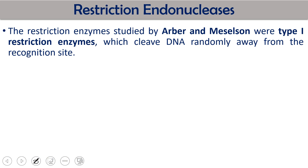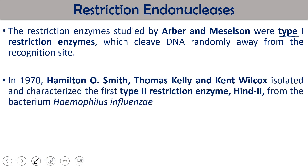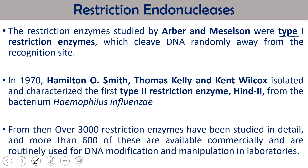The history of restriction endonucleases: they were first studied by Arber and Meselson, who studied the Type I restriction enzymes, which cleave randomly away from the recognition site. Then in 1970, Hamilton O. Smith, Thomas Kelly, and Kent Wilcox isolated Type II restriction enzyme Hind II — the first enzyme isolated from Haemophilus influenzae. This is the enzyme preferably used in molecular cloning. Till now more than 3000 restriction enzymes have been studied, and more than 600 are available commercially.